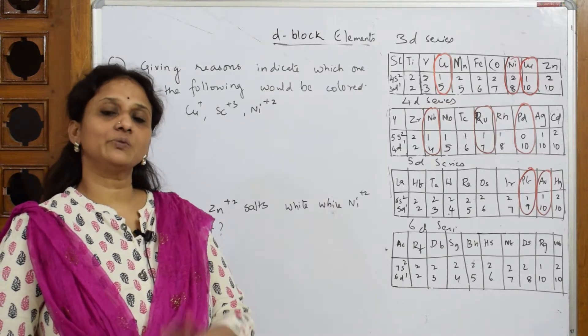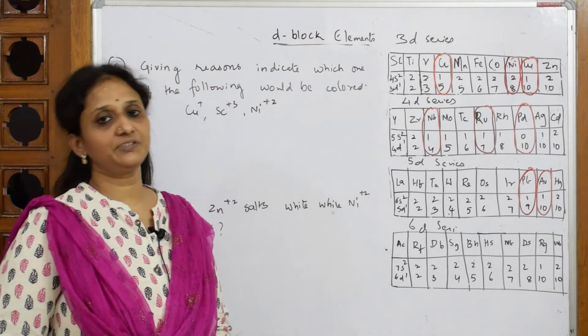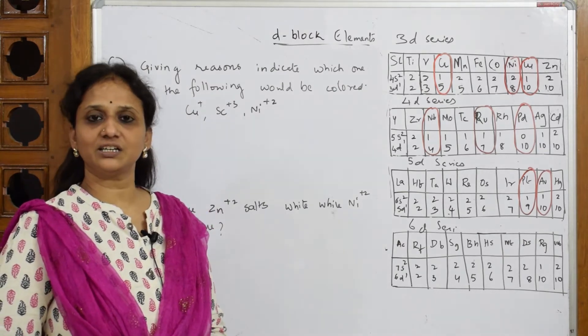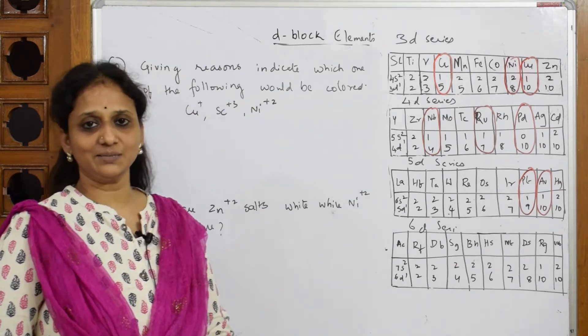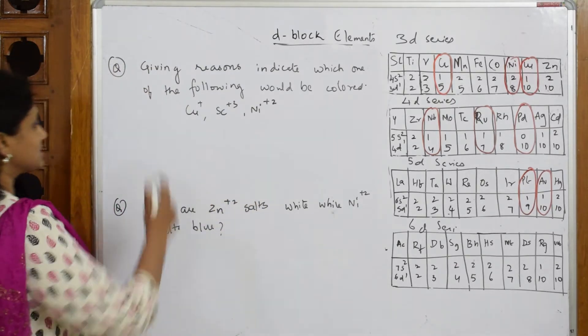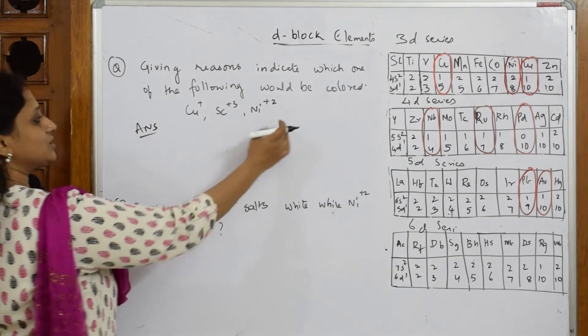Most important concept: when a question is asked based on color property, try to write the configuration first and after writing the configuration, whichever has unpaired electron, that one will be colored. Simple. So they've given us three examples. Let us write the configuration and write which is colored or not.